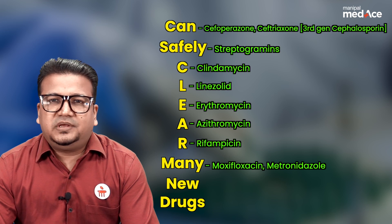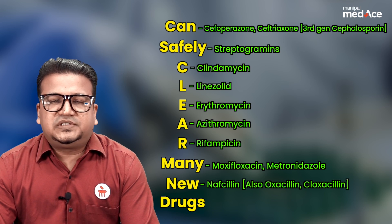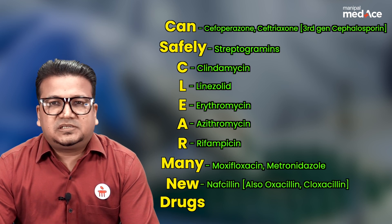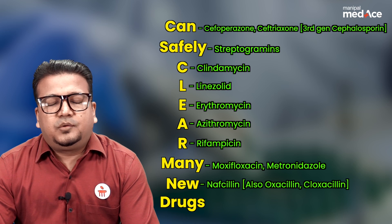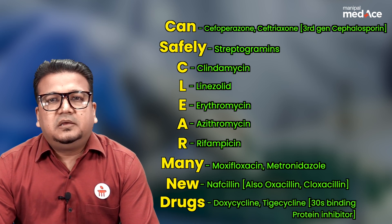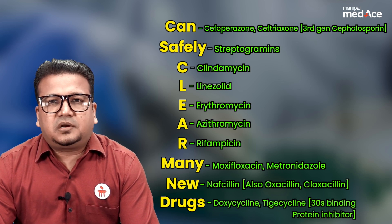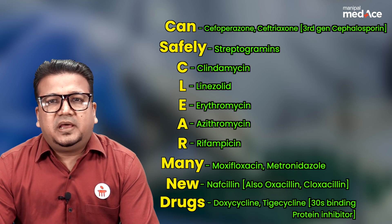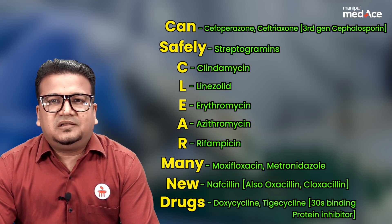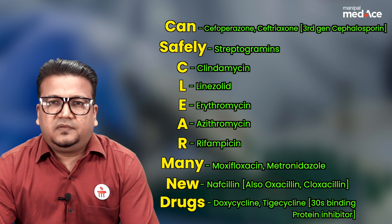Nu — N stands for nafcillin, the penicillin safest in renal failure. Drugs — D stands for doxycycline, the safest tetracycline in renal failure. You can also remember tigecycline as one new type of tetracycline safe in renal failure.